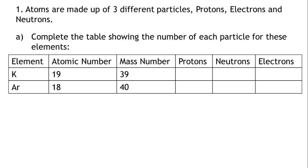Let's write down what we know. The atomic number is the number of protons in an atom. Therefore, the proton number for potassium, K, is 19, and the proton number for argon, Ar, is 18.